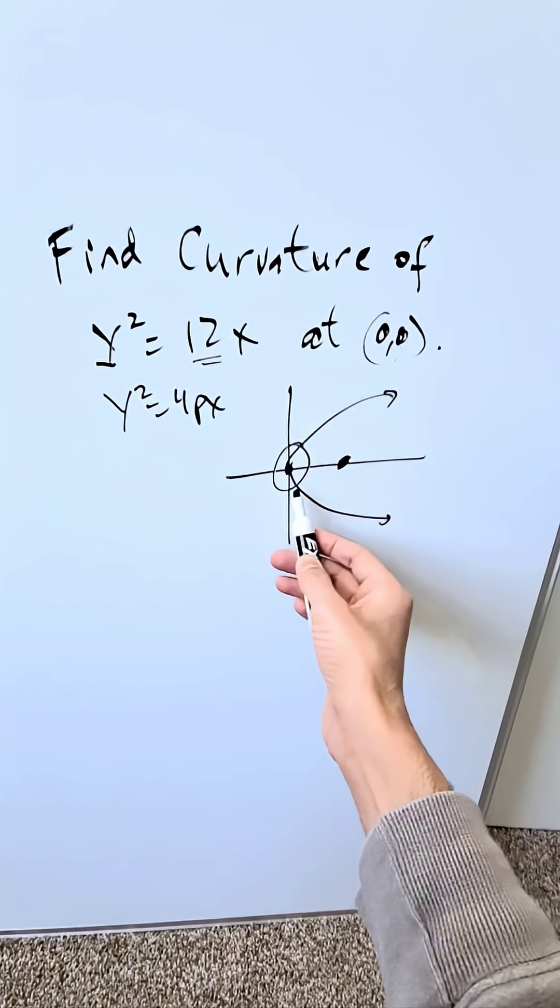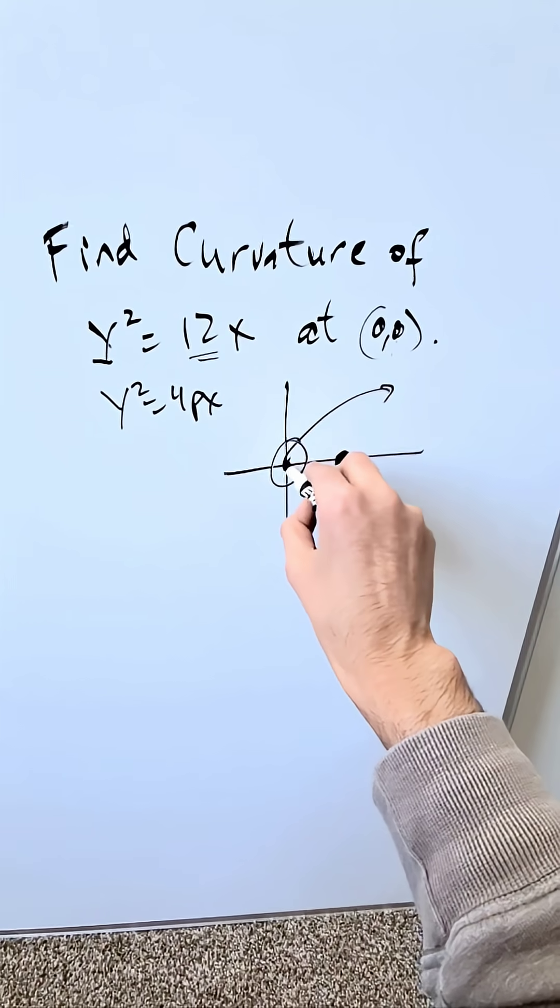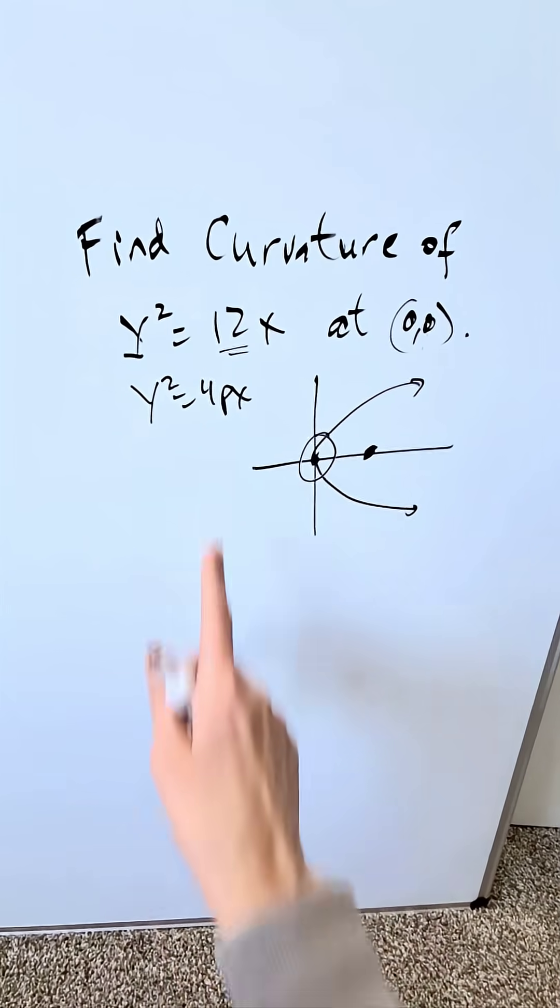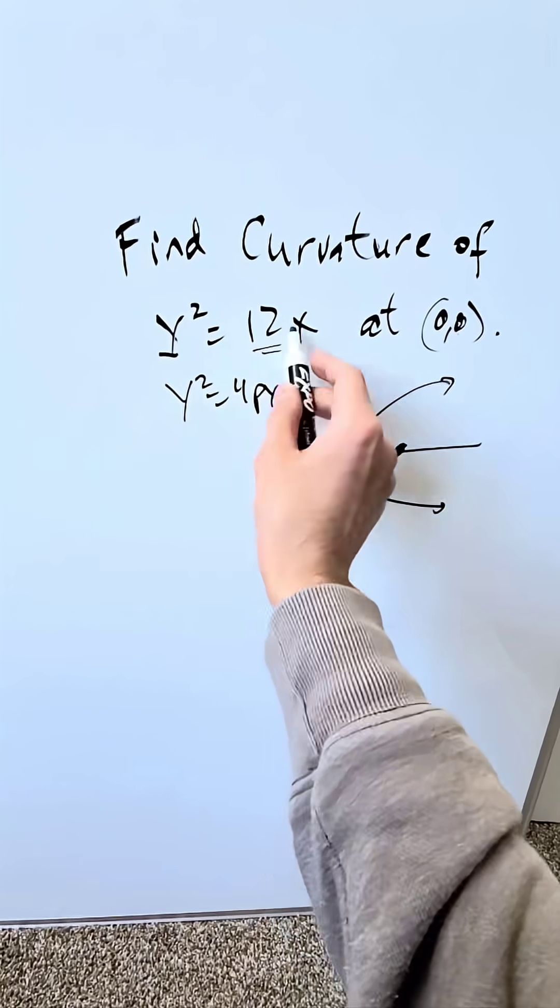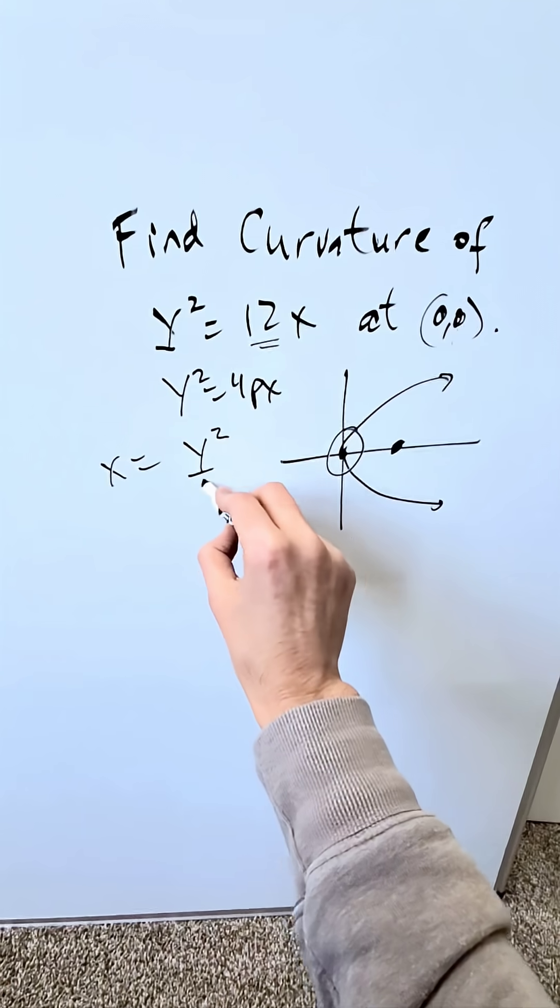What's the curvature of this expression at the origin? I was going to say function—it's not a function, this expression. How do we do it? If I take this expression Y²=12x, I'll solve for x: x = Y²/12.